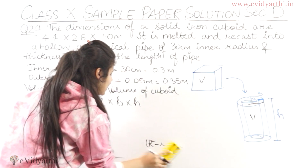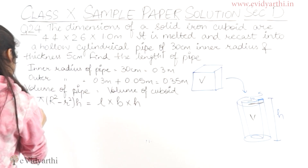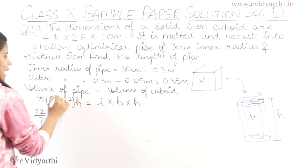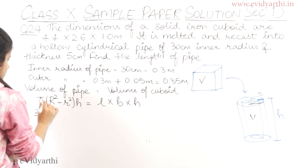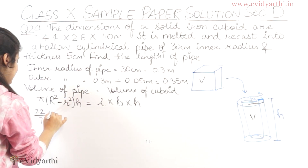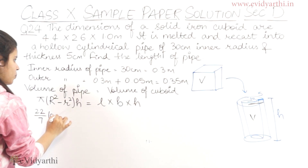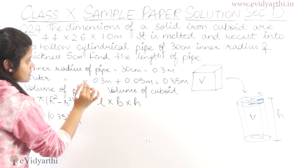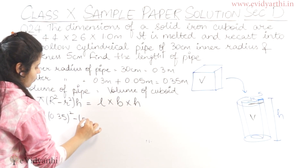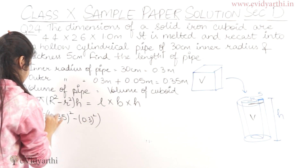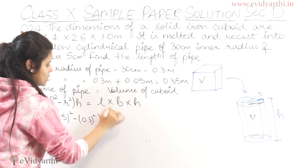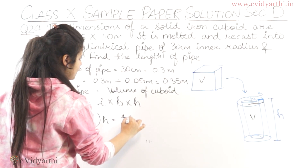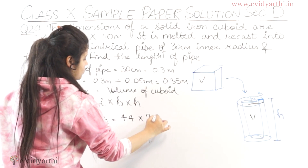Now let's put in the values. We have π = 22/7. The large R (outer radius) is 0.35, so we write: (22/7) × (0.35² - 0.3²) × h = 4.4 × 2.6 × 1.0.